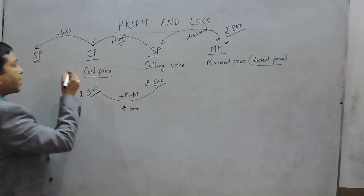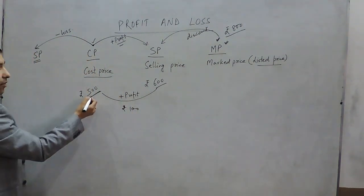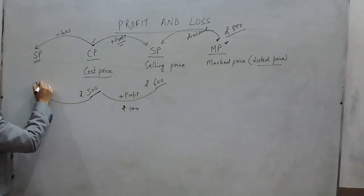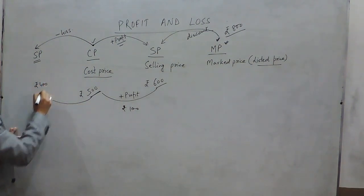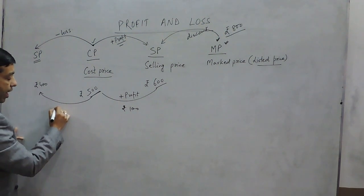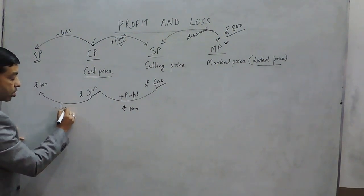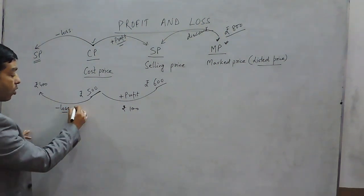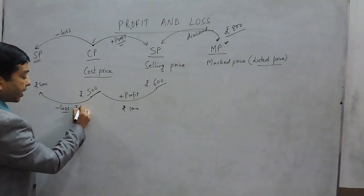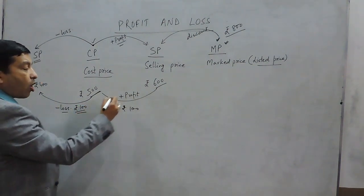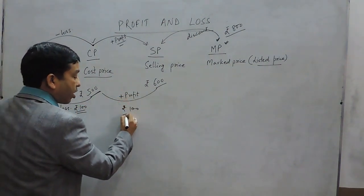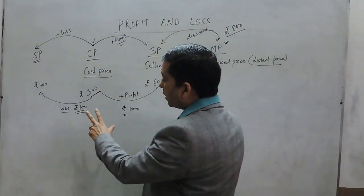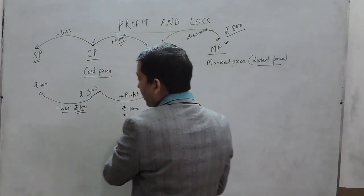On the other hand, suppose one purchases the article for Rs.500 and sells it for Rs.400 — this is known as a loss of Rs.100. So when I say there is a loss of Rs.100 or a profit of Rs.100, these are two terms: loss and profit.